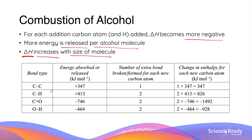Let's look at the energy involved in bond breaking and bond formation more quantitatively. The breaking of C–C and C–H bonds requires the absorption of specific amounts of energy. Every time we add a carbon atom to the alcohol, one additional C–C single bond and two additional C–H bonds need to be broken, adding up to 347 and 826 kilojoules per mole of energy additionally required.